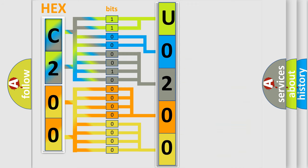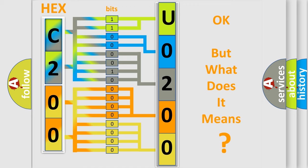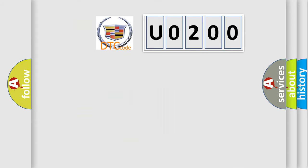We now know in what way the diagnostic tool translates the received information into a more comprehensible format. The number itself does not make sense to us if we cannot assign information about what it actually expresses. So, what does the diagnostic trouble code U0200 interpret specifically for Cadillac car manufacturers?